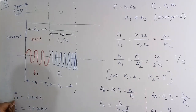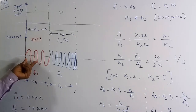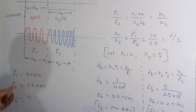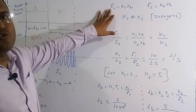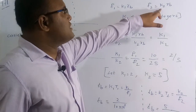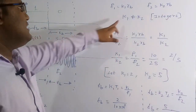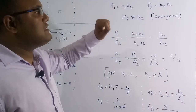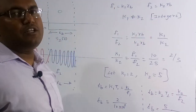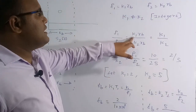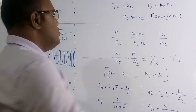For bit one, frequency is 10 kilohertz, and for bit zero, frequency is 25 kilohertz. We need to find bit interval TB. From a previous example: f1 = k1 × Rb and f2 = k2 × Rb, where Rb is the bit rate. Here k1 and k2 are integers and k1 ≠ k2. Dividing f1 by f2 gives k1/k2 = f1/f2.